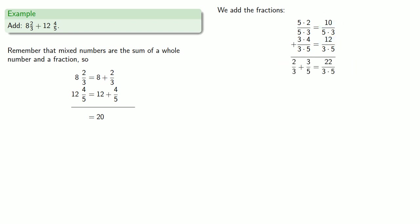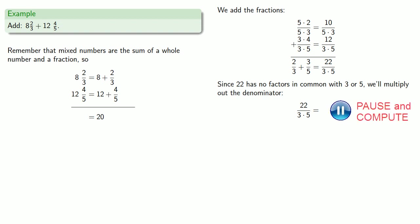2/3 plus 4/5 is 22 over 3 times 5, which we might try to reduce. But since 22 has no factors in common with 3 or 5, we'll multiply out the denominator to get our sum, 22/15.